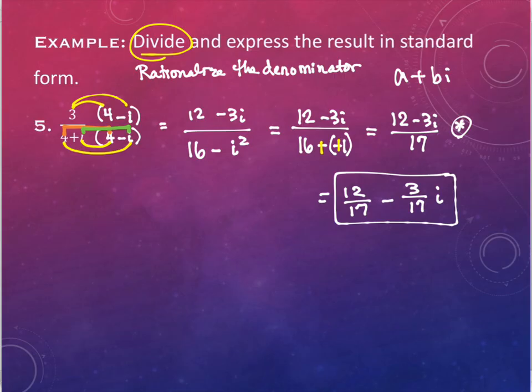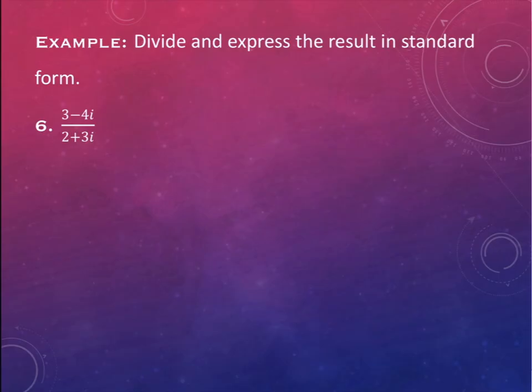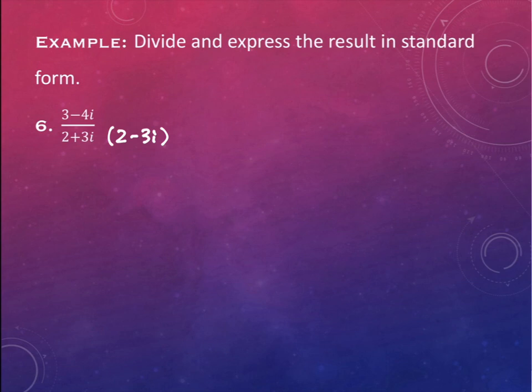All right, so we have another one. We're doing another one where it says divide — meaning rationalize the denominator. Our denominator this time is 2 plus 3i. What will I need to do to rationalize this denominator? Multiply by the conjugate: 2 minus 3i. And if I do it to the denominator, you've got to do it to the numerator as well.